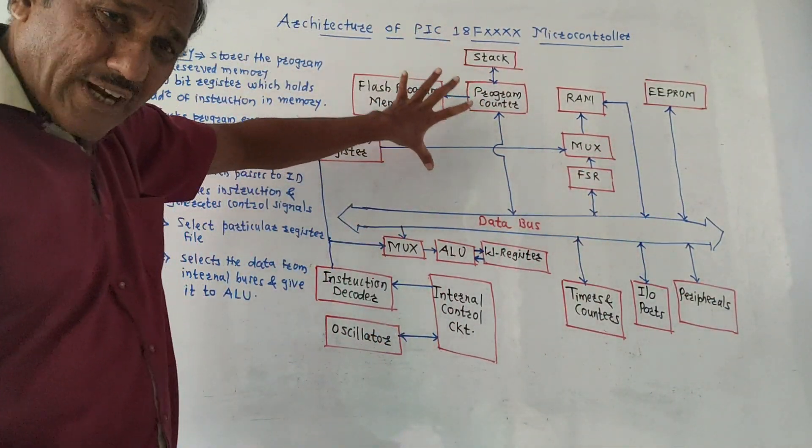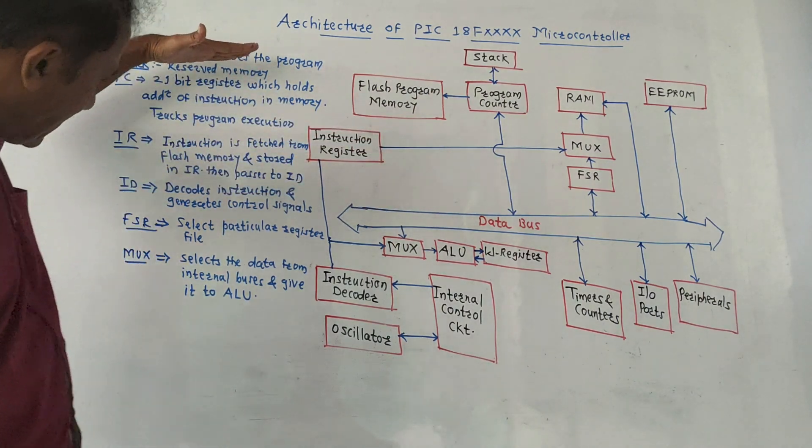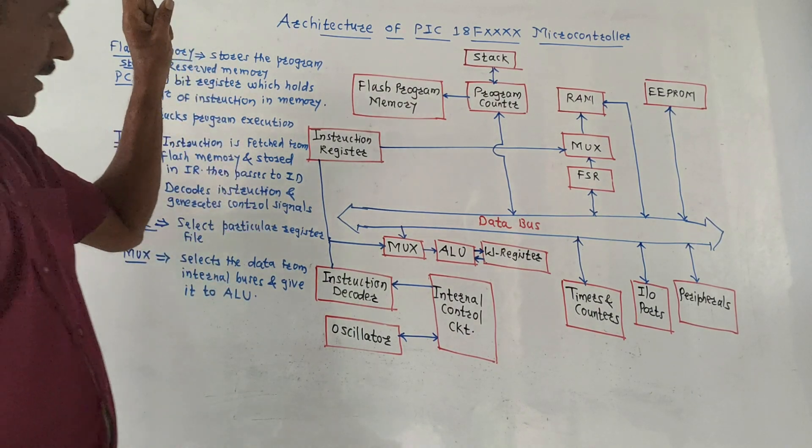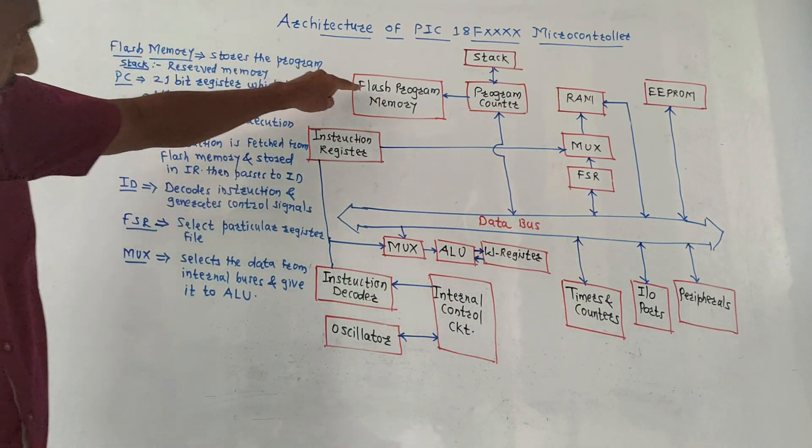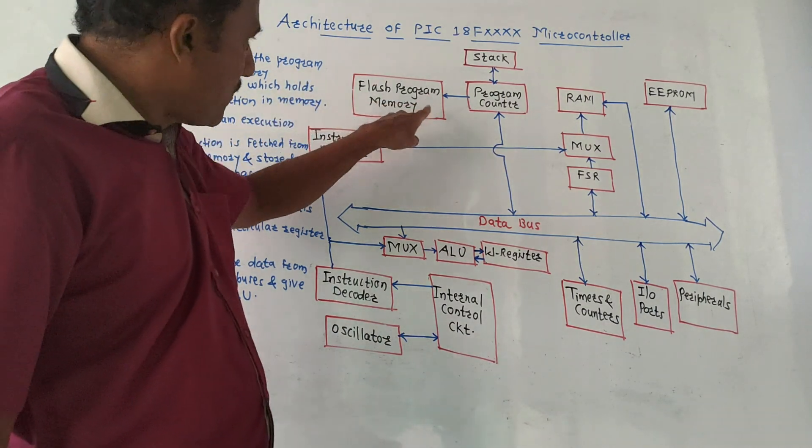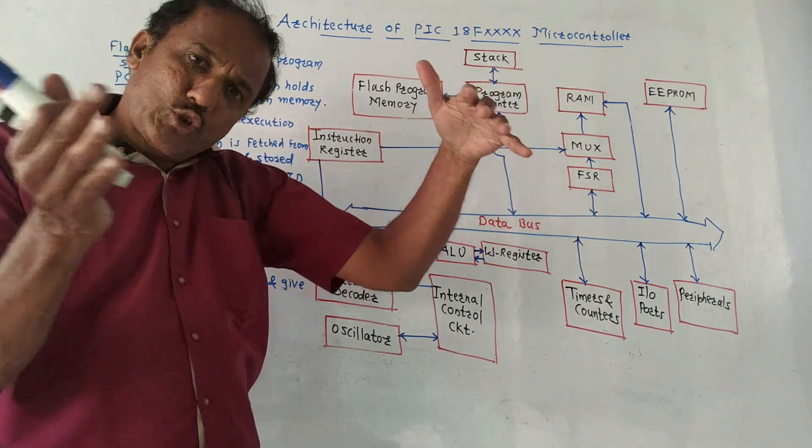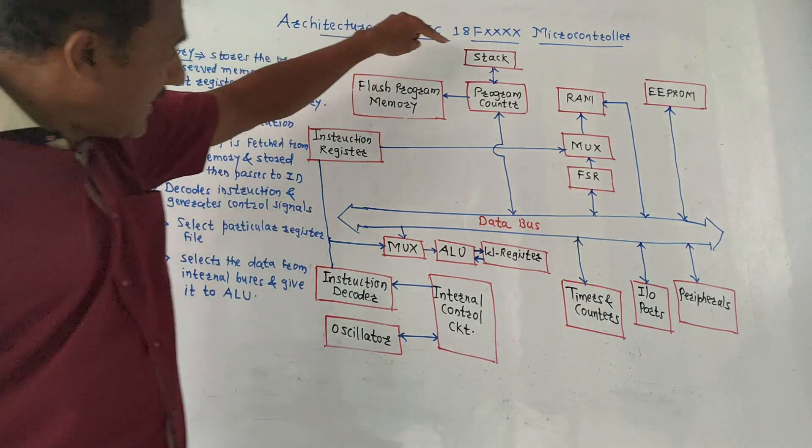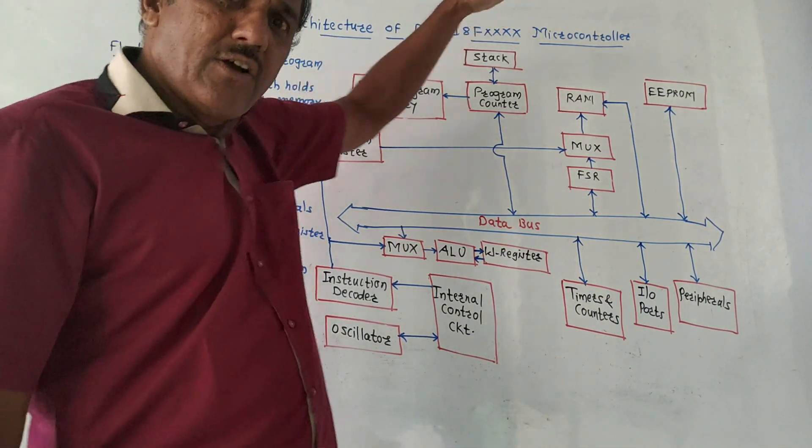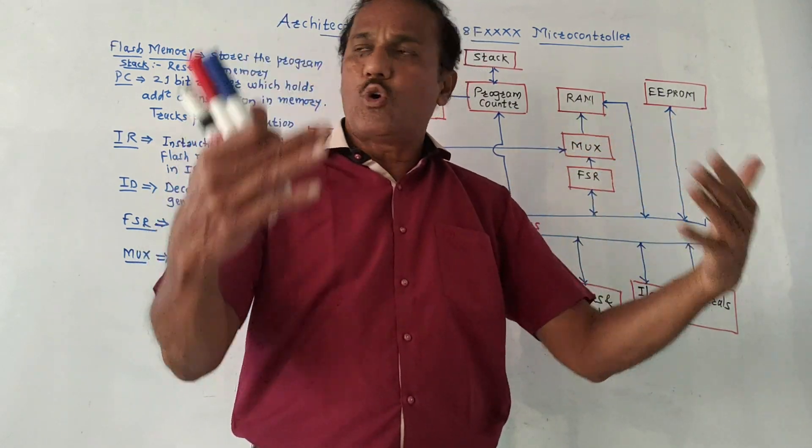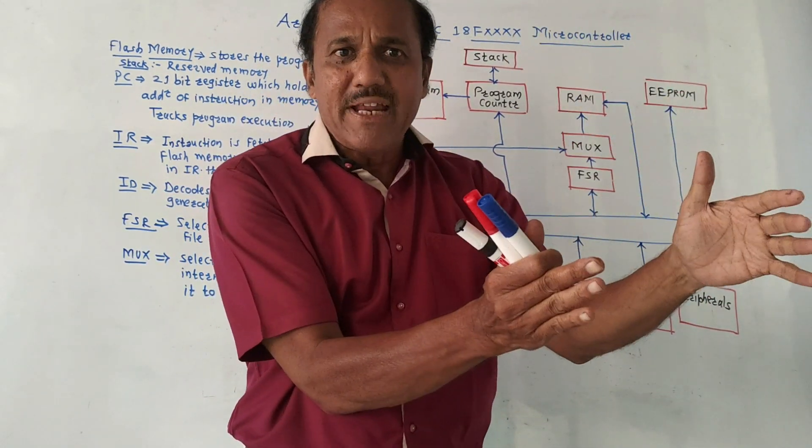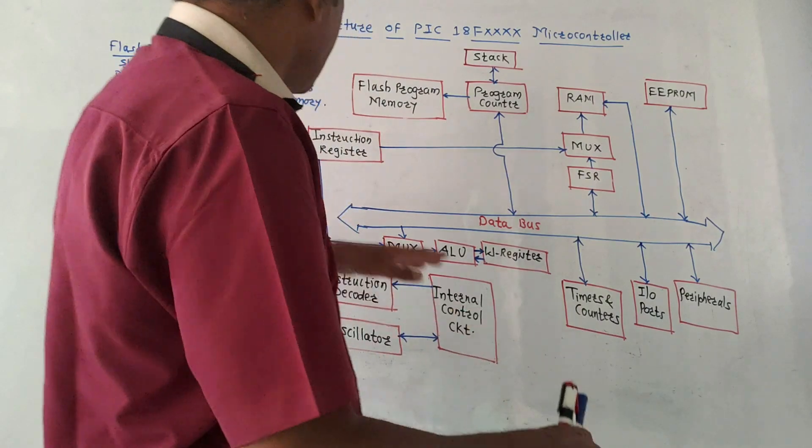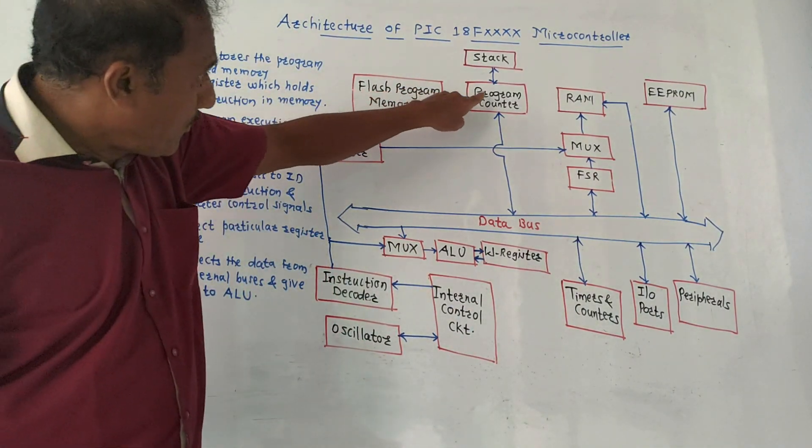If you want to write explanation of this block diagram, I have given some points. To start with, first block is flash program memory. It basically stores the program that you are going to execute. Then this block is the stack - we have already studied in 8051 - it is reserve memory which is required to store the data temporarily.